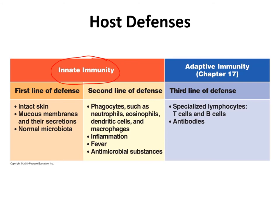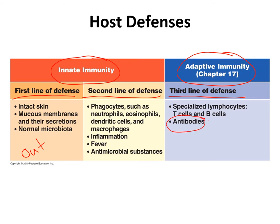Innate immunity is nonspecific and it is against all microbes in general, whether they are viruses or bacteria. It is composed of the first line of defense, meant to keep microbes out and prevent infection. If microbes get past the first line, it's up to your second line of defense to have nonspecific reactions to get rid of the infectious disease. Your adaptive immune response — also referred to as your specific immune response — is your third line of defense, where specialized T cells, B cells, and antibodies respond to that specific microbe causing infection.